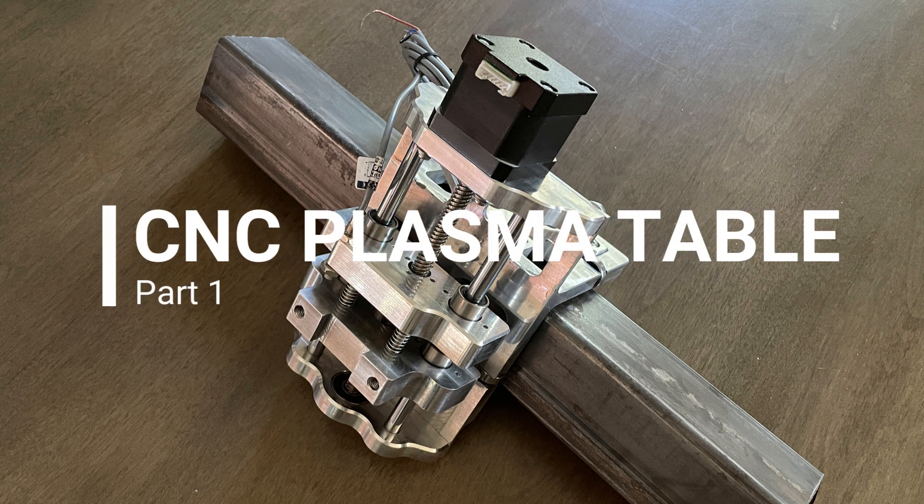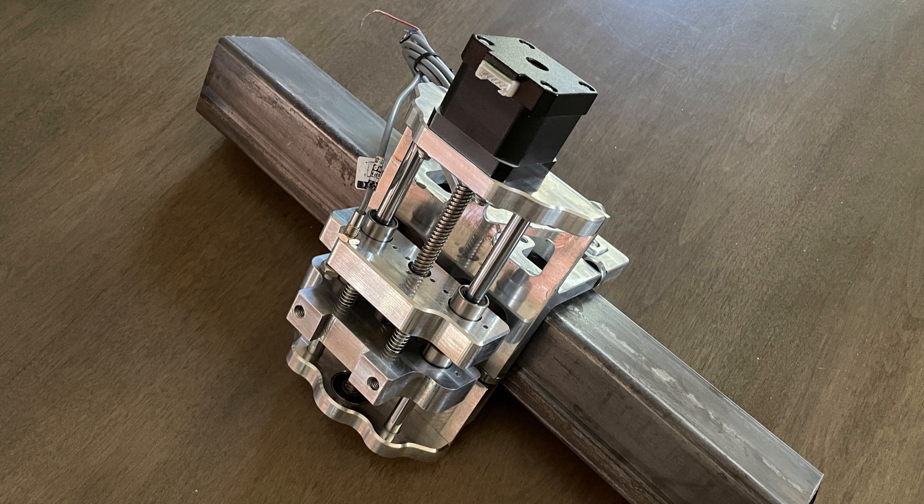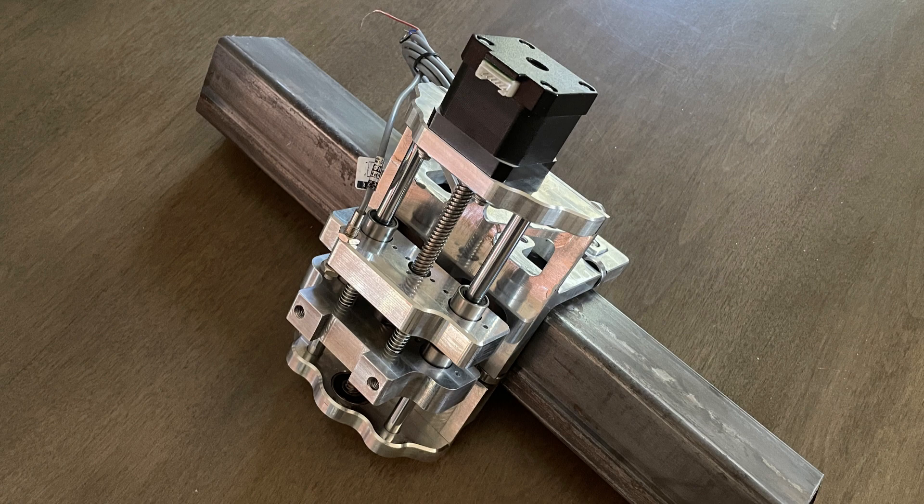Part 1 of the CNC Plasma Table Build. So I decided to make the Z-axis torch holder out of aluminum. So it would be a bit more robust, compact, and lightweight.